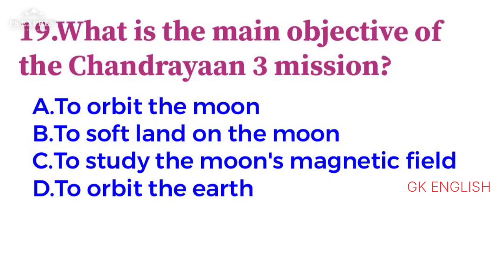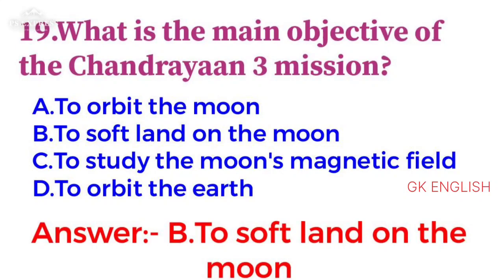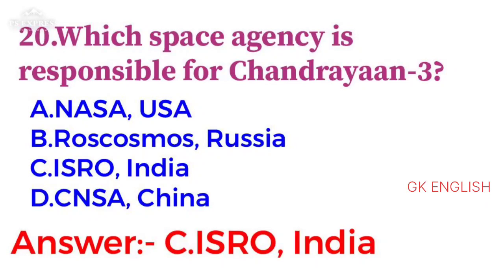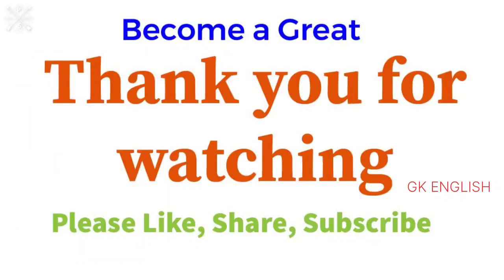What is the main objective of the Chandrayaan-3 mission? The answer is B: To soft-land on the Moon. Which space agency is responsible for Chandrayaan-3? The answer is C: ISRO, India. Thank you for watching. Please like, share, and subscribe.